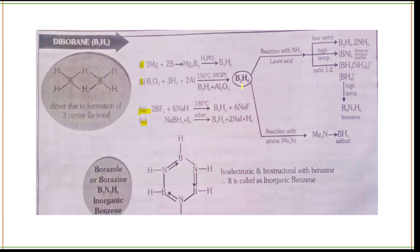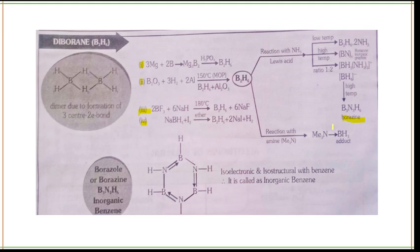Talking about the properties of B₂H₆: when NH₃ reacts with B₂H₆ at low temperature, B₂H₆·2NH₃ forms; at high temperature, BN (borazone or inorganic graphite) forms. In a 1:2 ratio, [BH₂(NH₃)₂]⁺[BH₄]⁻ forms, and at high temperature this yields borazole — also known as inorganic benzene — with formula B₃N₃H₆.